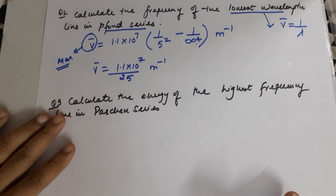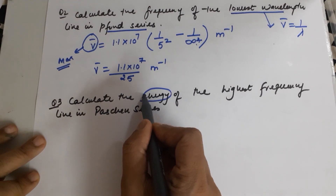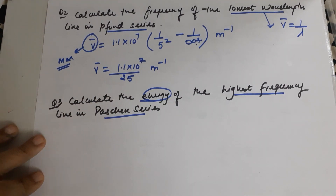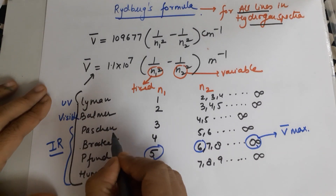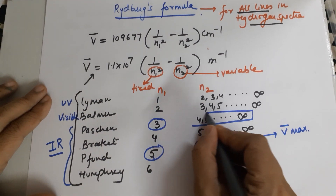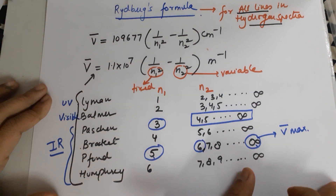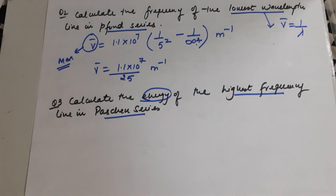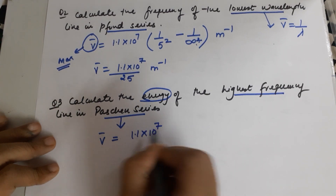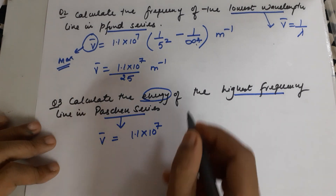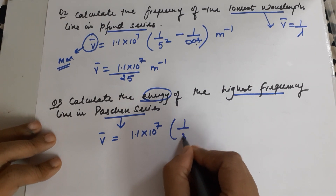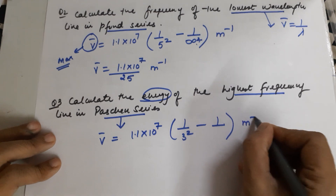Last question: Calculate the energy of the highest frequency of the Paschen series. For Paschen, n₁ = 3 and n₂ = 4 onwards. Highest frequency means minimum wavelength, which means maximum wave number, which means minimum subtraction — so n₂ = infinity. Therefore: V̄ = 1.1 × 10⁷ × (1/3² − 0) = 1.1 × 10⁷ / 9 m⁻¹. But the question asks for energy, not wave number.